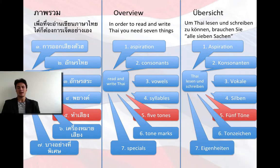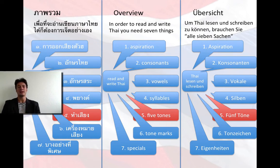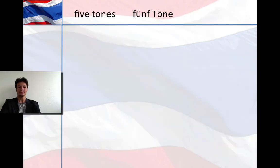Bis heute haben wir über die Aspiration gesprochen, die Konsonanten, Vokale und die Silben im Thai, und heute geht es um die fünf Töne in der thailändischen Sprache. Hasien, fünf Töne — the five tones.